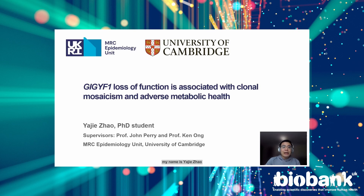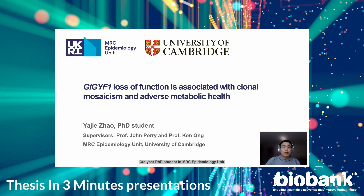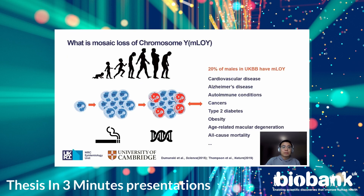Hello everyone, my name is Yadier Zhao, a third-year PhD student in the MRC Epidemiology Unit. Today I want to talk about our latest results on Mosaic loss of Y chromosome, which is the most common form of clonal mosaicism. As we all know, most men have one X chromosome and one Y chromosome, but with aging, part of some men's white blood cells will lose their Y chromosome. This phenomenon is called Mosaic loss of Y chromosome.